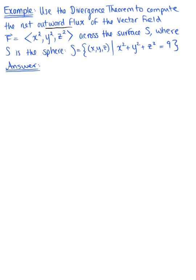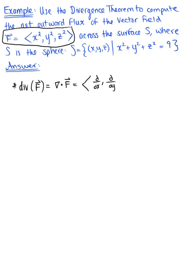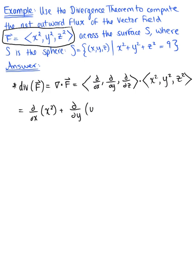Using our given vector field, let's jump right in and compute the divergence. The divergence of our vector field is defined as the dot product of the del operator with that vector field. So we have del dotted with (x², y², z²), which gives us the derivative of x² with respect to x, plus the derivative of y² with respect to y, plus the derivative of z² with respect to z. This leaves us with 2x plus 2y plus 2z — the divergence of our vector field.